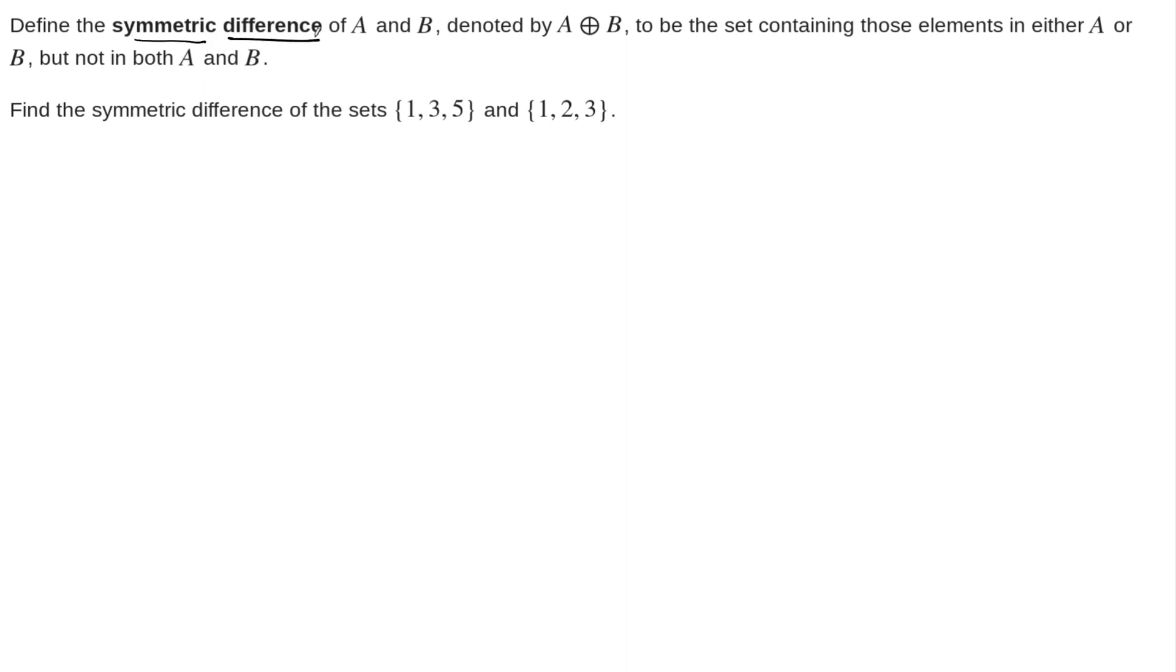And it tells us exactly what the symmetric difference does. So it's the set that contains all the elements that are either in A or in B, but not in both. So this is like the exclusive or. It excludes all the things that are in both. So we're asked in this example to find the symmetric difference of these two sets.